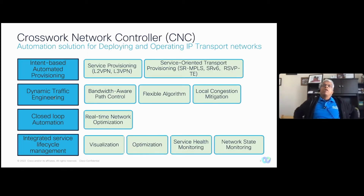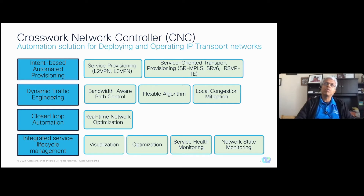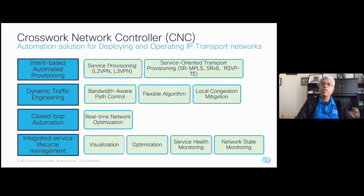A little bit of recap in case you missed it. CNC is a vertical solution focusing not only on provisioning, but also service traffic engineering, visualization, real-time optimization, and service assurance — all the things you need to manage your network after you provision it. Provisioning is included, and it does use NSO underneath. It has integration with SRPCE and the telemetry collection layer to get bandwidth information, and then do path control and path calculation.